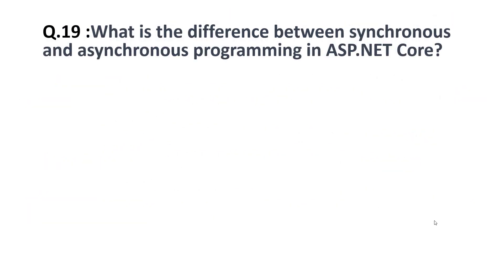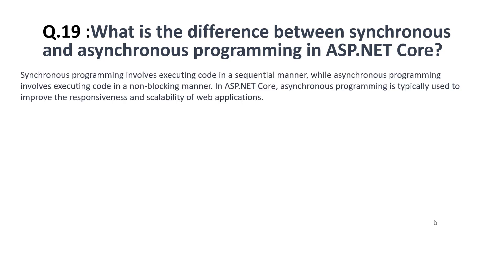The nineteenth question is: what is the difference between synchronous and asynchronous programming in ASP.NET Core? Synchronous programming involves executing code in a sequential manner, while asynchronous programming involves executing code in a non-blocking manner. In ASP.NET Core, asynchronous programming is typically used to improve the responsiveness and scalability of web applications.